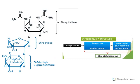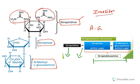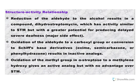Streptomycin is made up of three rings: streptidine, streptose, and N-methyl glucosamine. Streptidine is a derivative of inositol, with two guanidino groups attached at positions 1 and 3. It is glycosidically bound to streptose, which is a furanose carbohydrate derivative. Streptose is again bonded to N-methyl glucosamine, which is a pyranose derivative. So streptomycin contains all three rings.